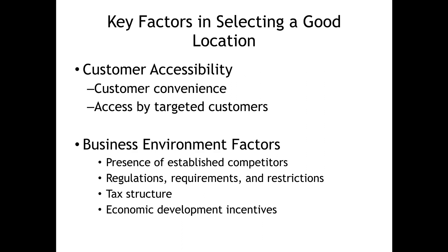Key factors in selecting a good location: you have to think about customer accessibility — being convenient and accessible to your target customers. You also need to think about the presence of established competition. Sometimes competition is a good thing. Along the Highway 78 corridor there are many breweries and taprooms, and there's a widely held sentiment in the brewing industry that having so much competition is actually good because they work together and lift one another up.